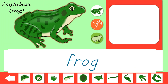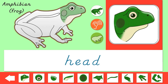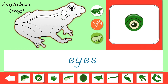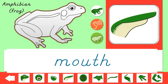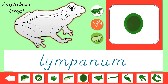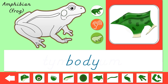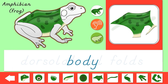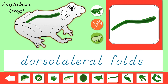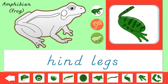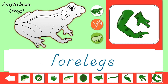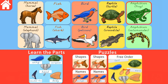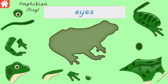Let's learn the parts of a frog! Head, eyes, nostrils, mouth, tympanum, body, dorsolateral folds, hind legs, webbed feet, fore legs. Find the animal puzzle piece that matches the label shown.